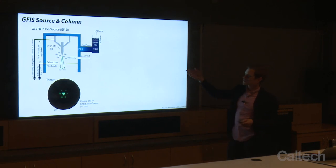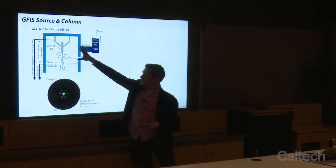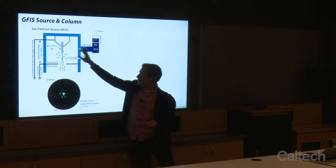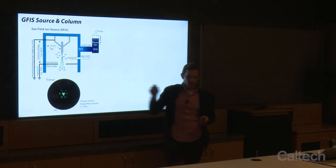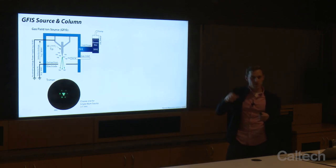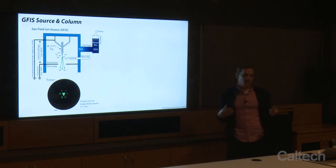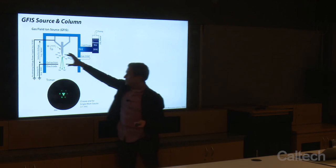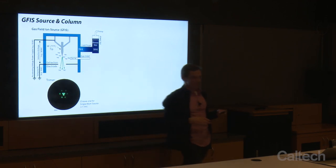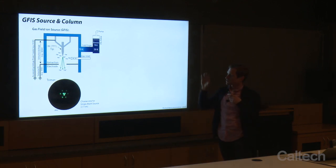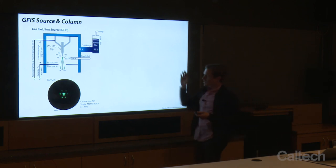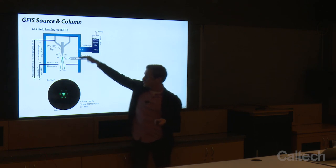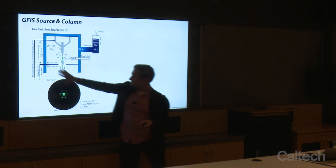Here's our gas field ion source. It has an atomically sharp tungsten needle with the 1-1-1 plane. We hold this tip at positive potential so that when we flow in helium gas, if it gets close enough to the tip, an electron will tunnel from the helium atom to the tip, thus ionizing the helium. We have an extraction field set up — by having an electric field at the sharp end of the tip, the field is strongest there, so that's where we get the most ionization. Once we ionize, we also have an accelerating voltage to accelerate those ions down the column.